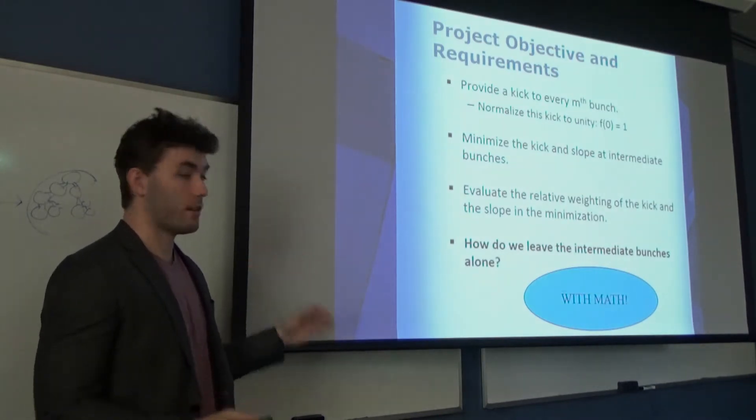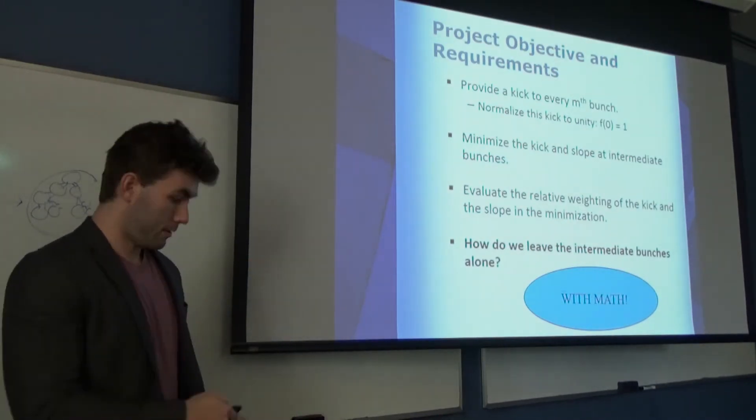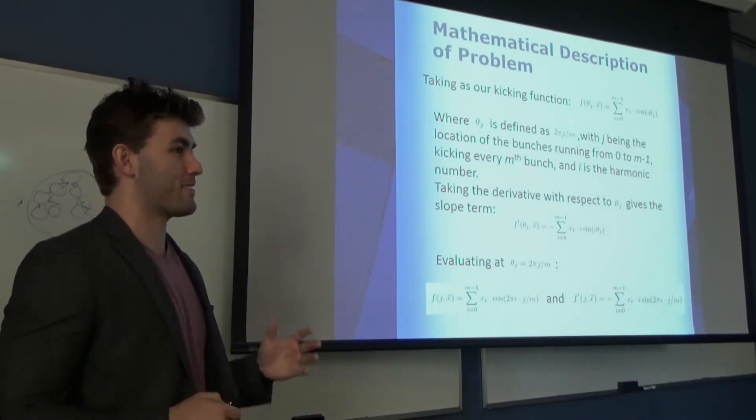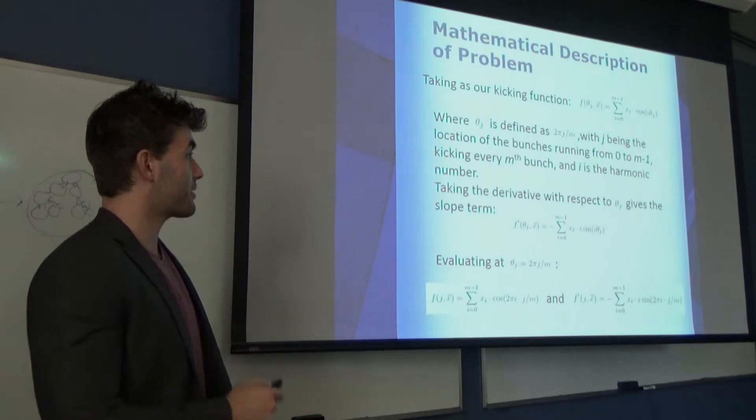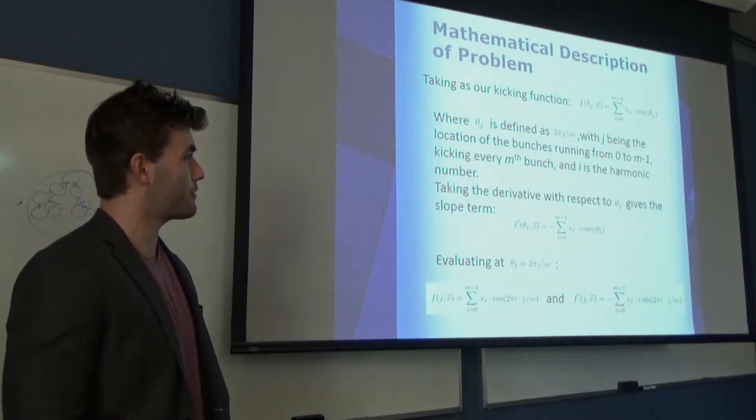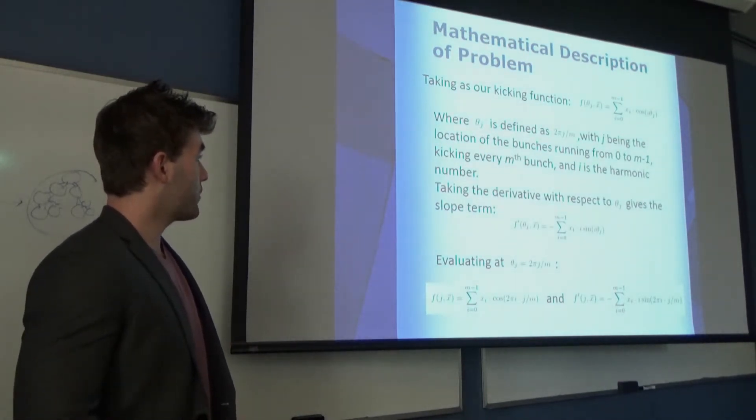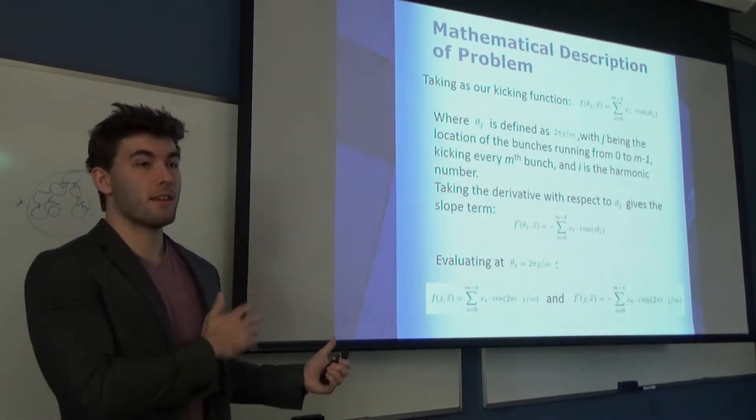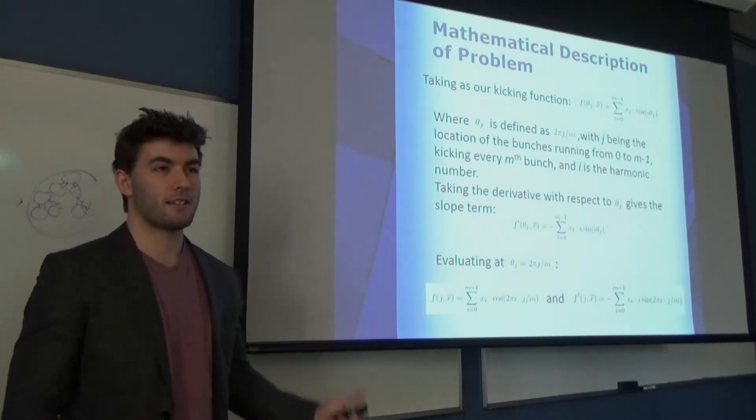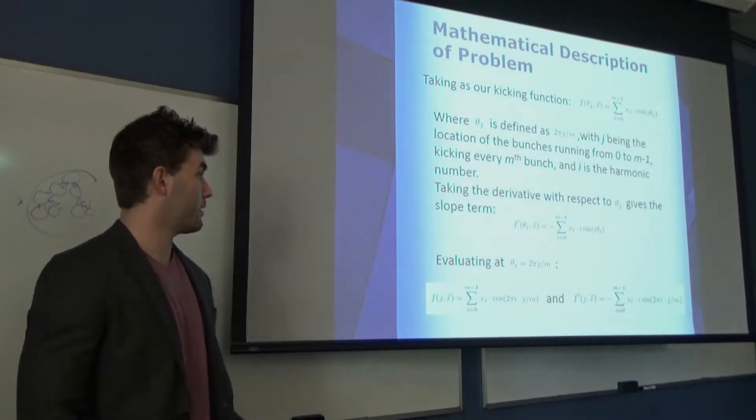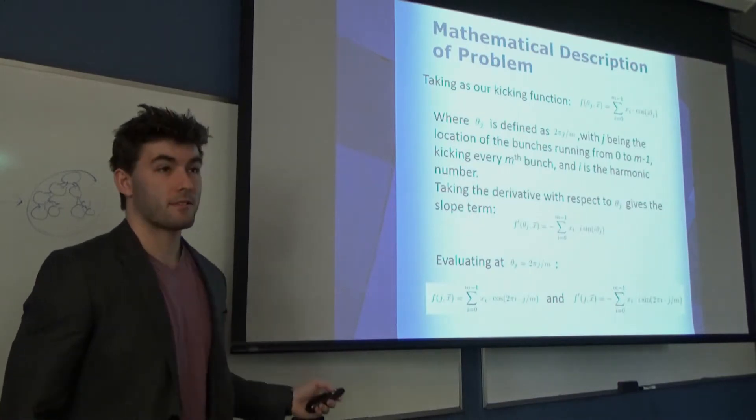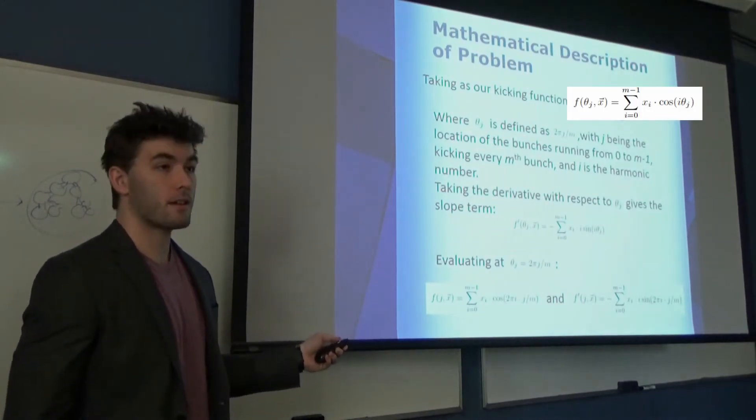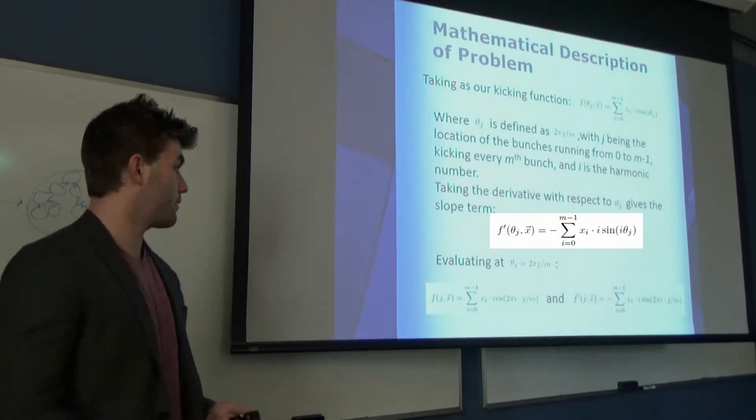How do we leave the intermediate bunches alone? We need to do a little bit of math. These pulsed signals can be described as a linear combination of cosines. The location of each electron bunch is going to be j. We're going to be kicking every nth bunch. And i is the index that we're summing over for bookkeeping. I mentioned minimizing the slope as well. So that says that we're going to take the derivative of this function with respect to theta in order to get a term that relates to the slope.